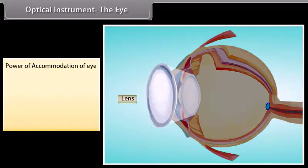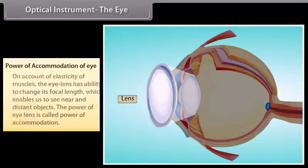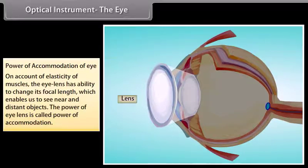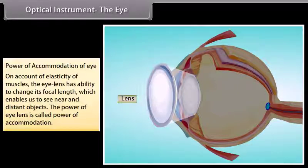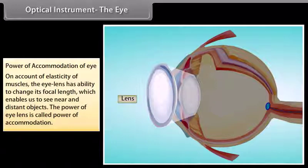On account of the elasticity of muscles, the eye lens has the ability to change its focal length, which enables us to see near and distant objects. This ability of the eye lens is called the power of accommodation.